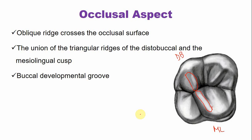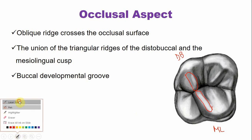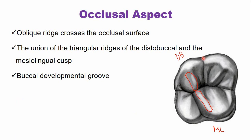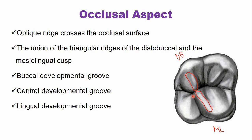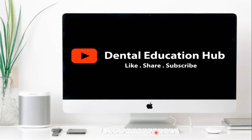There are several developmental grooves on the occlusal surface. The prominent ones are the buccal developmental groove arising from the central fossa and passing between the two buccal cusps, the central developmental groove, and the lingual developmental groove that divides the mesial lingual and distal lingual cusps. This concludes the brief description of the maxillary permanent first molar. Thank you for watching, please leave feedback in the comments.